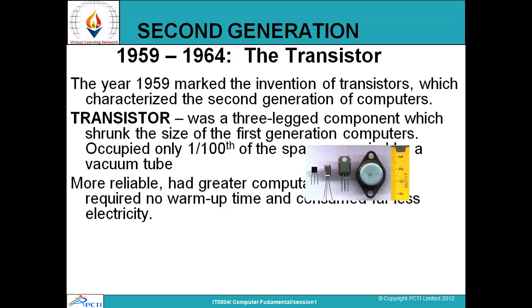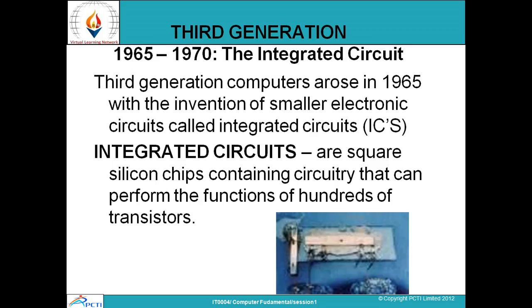The second generation of computers came in 1959 and lasted until 1964. The main component was the transistor, a three-legged component which shrunk the size of computers significantly — occupying about one-hundredth of the space of a vacuum tube. These computers were better than the first generation and generated less heat, but they still had disadvantages.